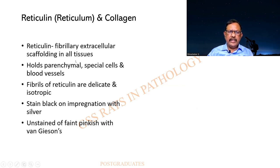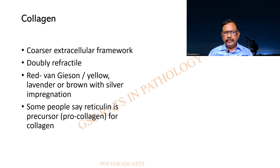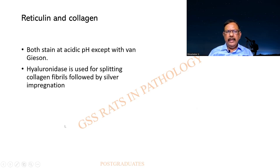Reticulin is a fibrillary extracellular scaffolding or bordering of all tissues. It holds the parenchymal cells as well as the special cells and blood vessels. They are delicate and stain black on impregnation with silver. If unstained and done with Van Gieson, it takes up a pink color which is not very specific — that is why we use the reticulin stain. Collagen, on the contrary, is doubly refractile and is found in bundles formed from procollagen, which in turn can develop from a fibroblast.